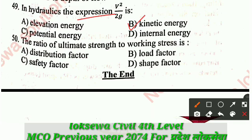Question number 50: The ratio of ultimate strength to working stress is: A - distribution factor, B - load factor, C - safety factor, D - safety factor. The correct answer is C: safety factor. Note that load factor is the ratio of ultimate load to working load, which is different from safety factor.